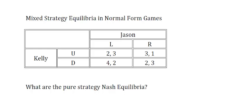We have the possibility that up and left is an equilibrium. Well, it can't be an equilibrium because if Kelly knows Jason is playing left, she would prefer to play down and get 4 instead of 2. So that's not an equilibrium. Let's look at down and left. That's not going to be an equilibrium either, because if Jason knows that Kelly is going to play down, he is going to play right and get 3 instead of 2. So neither one of those is an equilibrium.